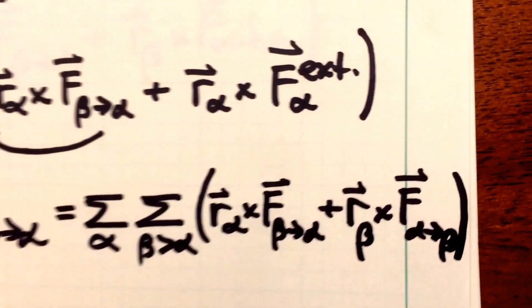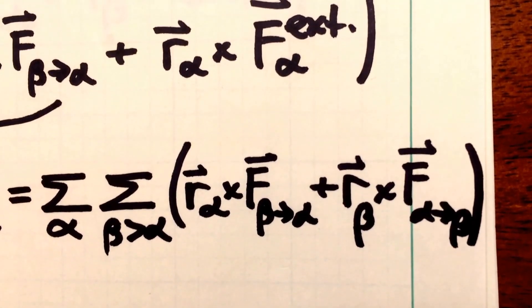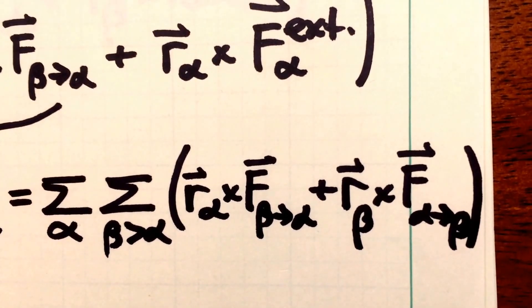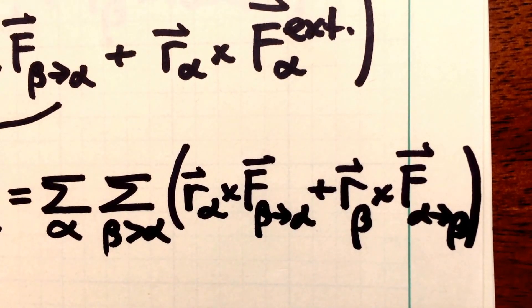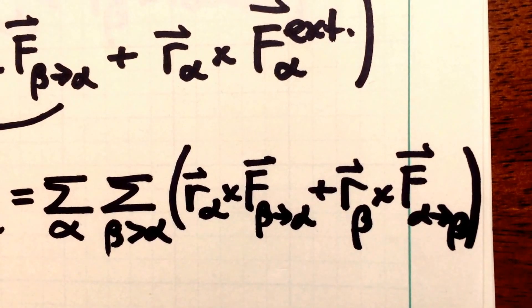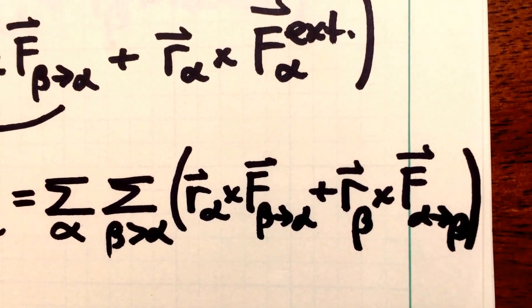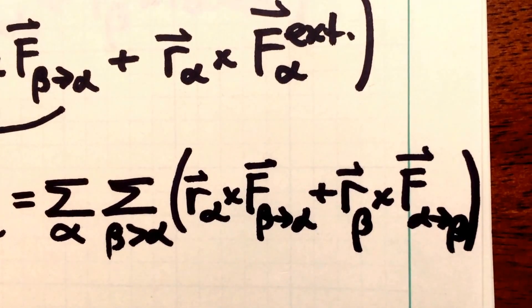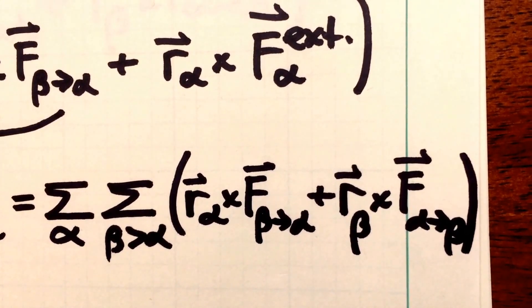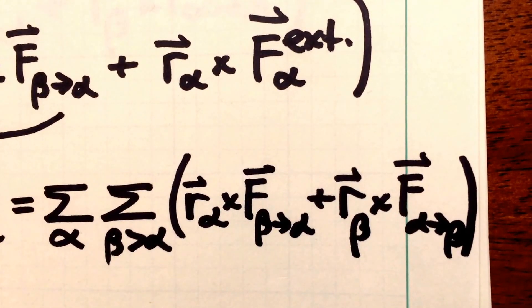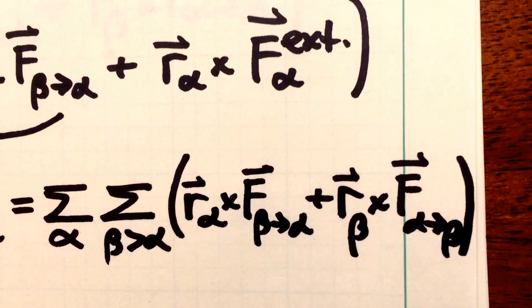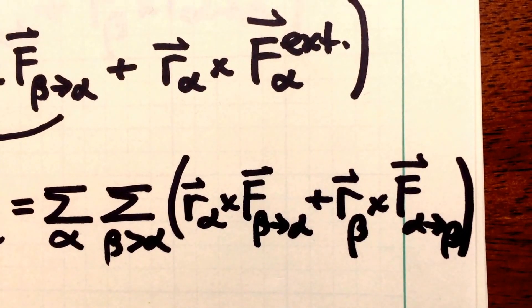And we can see what's happened now is that we have two components to that term in the sum. We have vector r alpha crossed into the force vector for particle beta acting on alpha, plus r beta, so this is the vector location for particle beta, crossed into the force vector representing particle alpha's forces on particle beta.